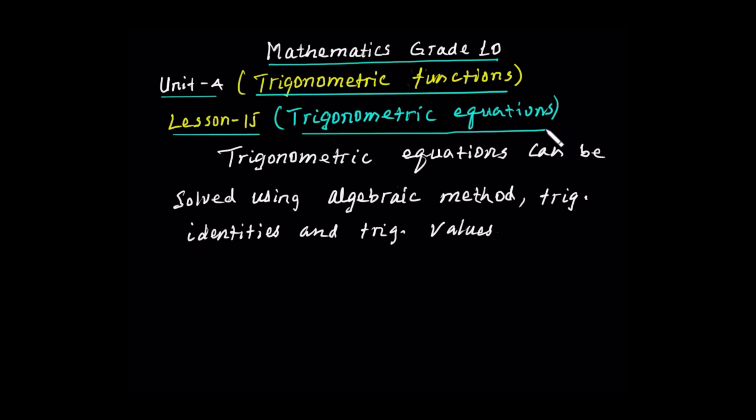When it comes to a bigger bound, it is a little more complex. Because if you are trying to make a trigonometric equation, you can make a trigonometric equation. Trigonometric equations can be solved using algebraic methods. Algebraic method is just the usual addition, subtraction, multiplication and division, trigonometric identities and trigonometric values of angles.